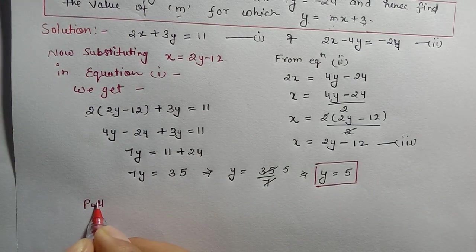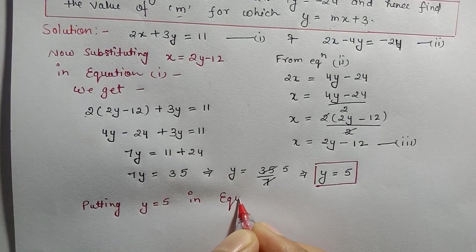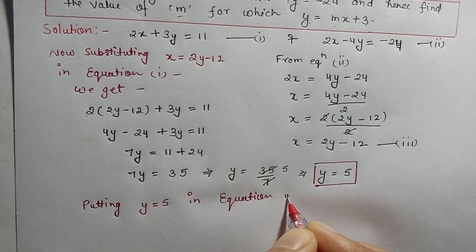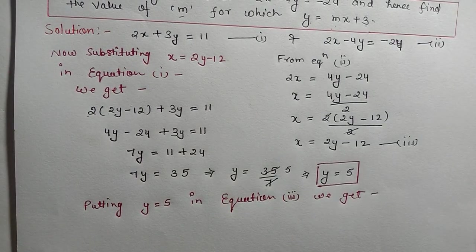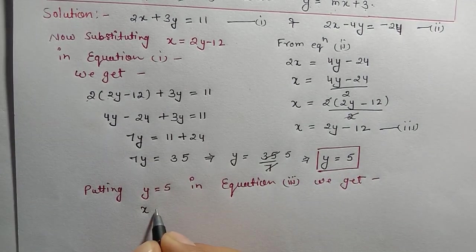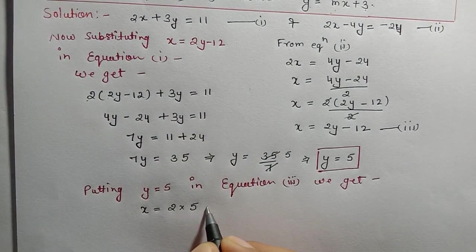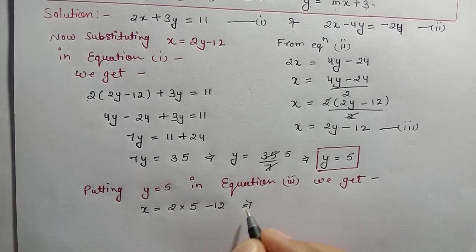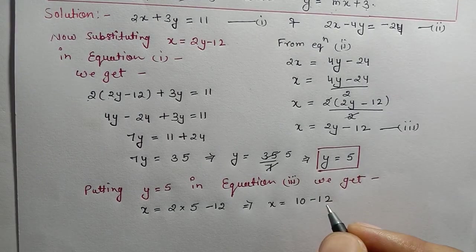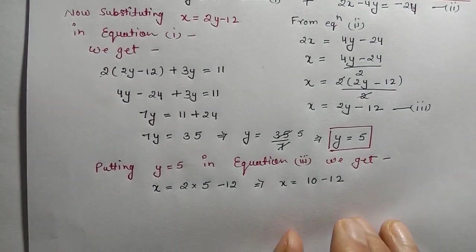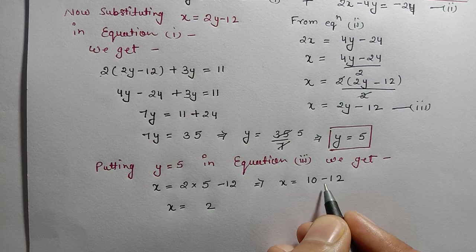Now substituting y = 5 into equation number three: x = 2(5) - 12 = 10 - 12. Therefore x = -2.